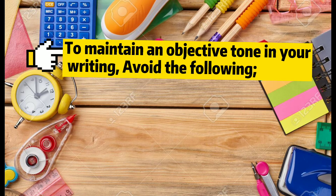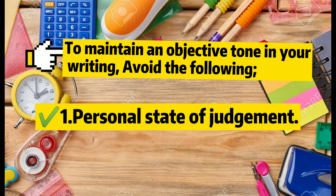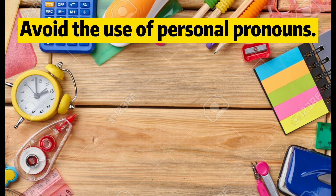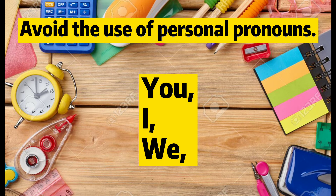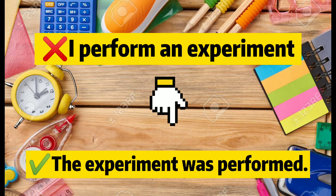Therefore, to make your essay or research paper convincing, you must use an unbiased style of writing. To maintain an objective tone, avoid: personal statements of judgment and emotional language. In writing a research report, avoid the use of personal pronouns such as you, I, and we. For example, instead of writing 'I performed an experiment,' write 'The experiment was performed.'